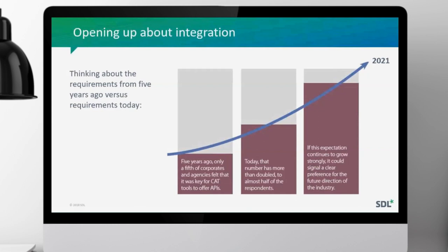Not too long ago only about a fifth of corporations and agencies felt it was key for CAT tools to have APIs — many companies were still getting used to working with CAT tools. But as needs and pressures have grown, today that number has more than doubled to almost half of respondents needing better integration. By 2021 it's expected to grow further. The clear signal is that technology providers must think not just about the tool itself but how it fits internally and helps organizations work more efficiently across their whole workflow.